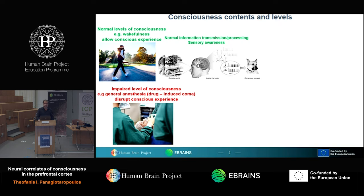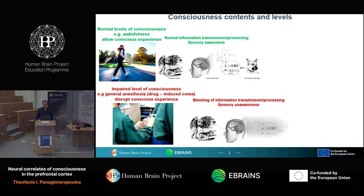Apart from the contents of consciousness, we also have the levels of consciousness. When we have impaired levels of consciousness, like under general anesthesia — which can be considered a drug-induced coma, a disorder of consciousness — we have disruption of conscious experience. Although it is possible to have sensory input like auditory or visual input, it is not possible to have sensory awareness. We have a condition of sensory unawareness and the neural correlates of consciousness are diminished.